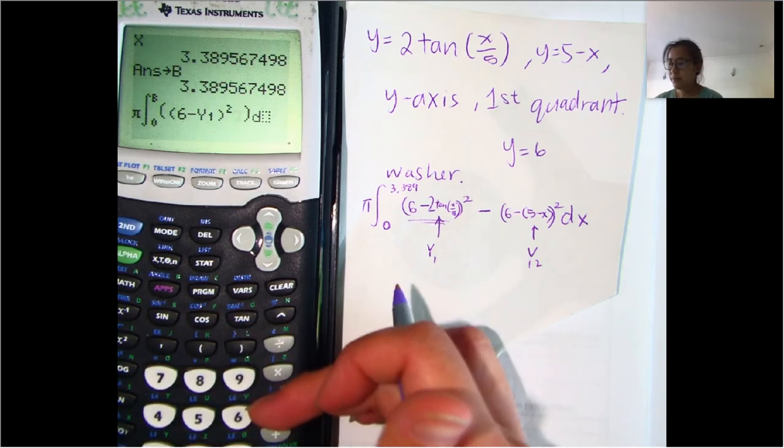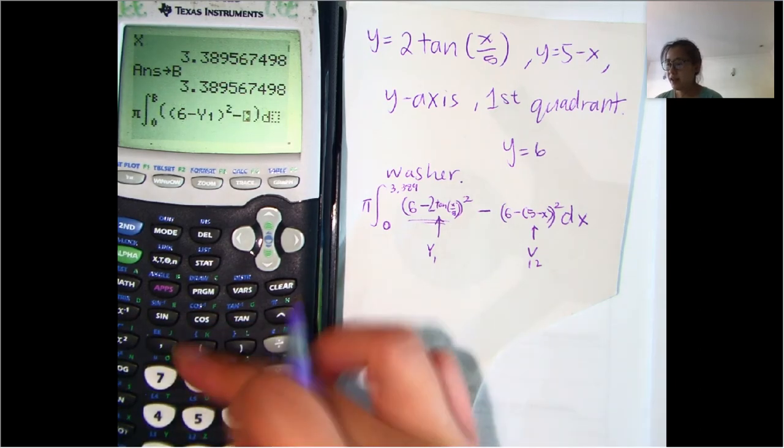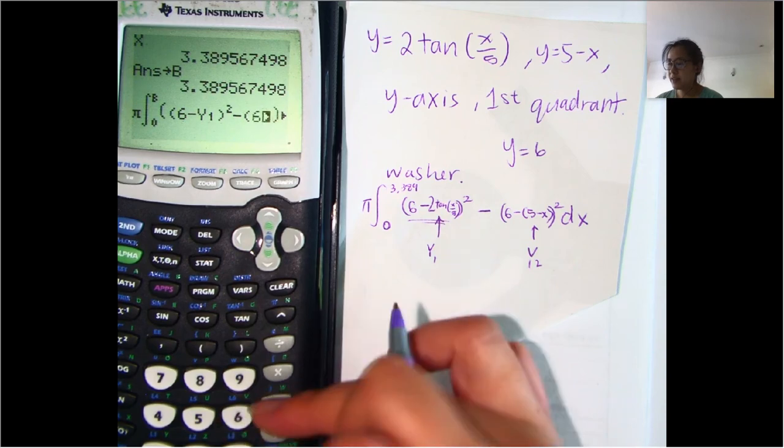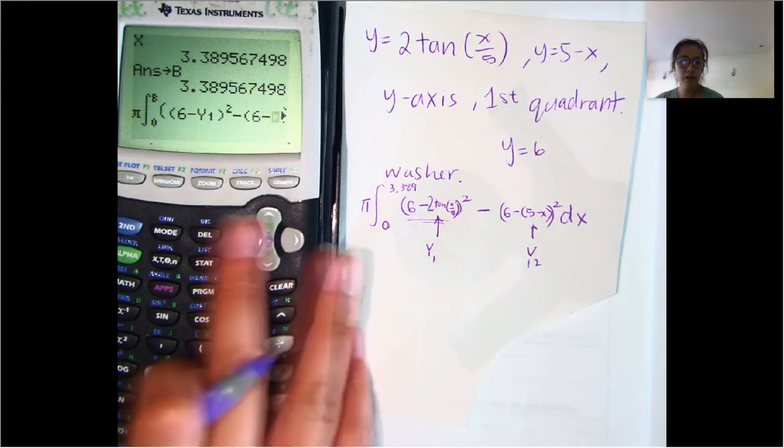minus, and then, again, in parentheses, 6 minus, and then this is going to be y2. So to get to y2, again, we go to variables, because y is a variable,